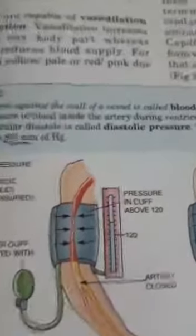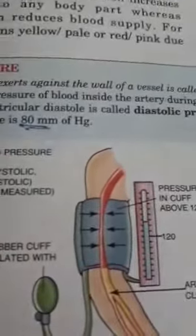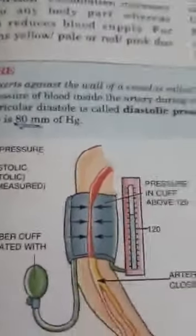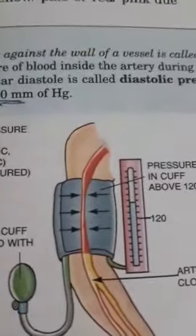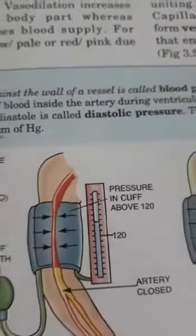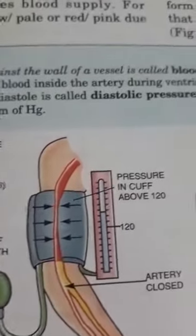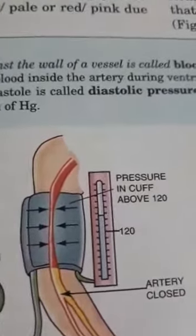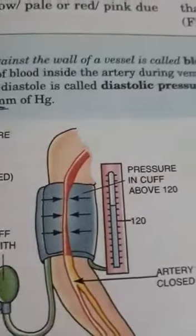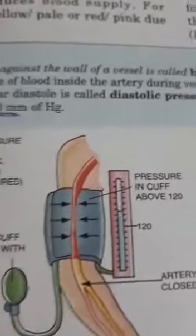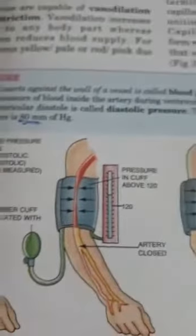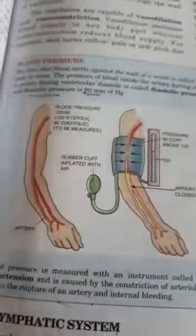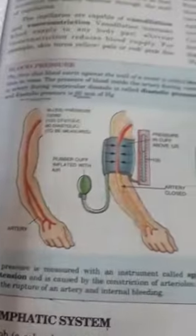The normal systolic pressure is 120 mmHg and the normal diastolic pressure is 80 mmHg. Systolic pressure is the pressure when the heart is contracting, and diastolic pressure is when the heart is in a relaxed position. That is why pressure is higher during systole and lower during diastole.